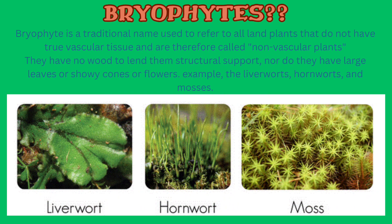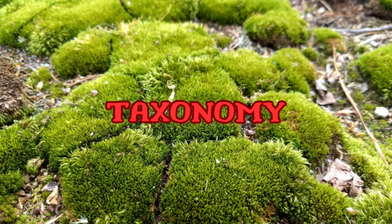Bryophyte is a traditional name used to refer to all land plants that do not have true vascular tissue, and are therefore called non-vascular plants. They have no wood to lend their structural support, nor do they have large leaves or sherry cones or flowers. Examples are the liverworts, hornworts, and mosses.